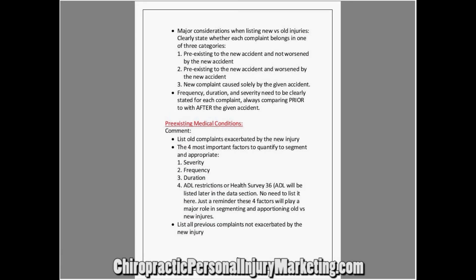The components you want to pay a lot of attention to for pre-existing conditions are frequency, duration — typically from the onset of addiction — and severity. These need to be clearly stated in each of these complaints, prior and after. Do everything you can to remember that history and get that information.